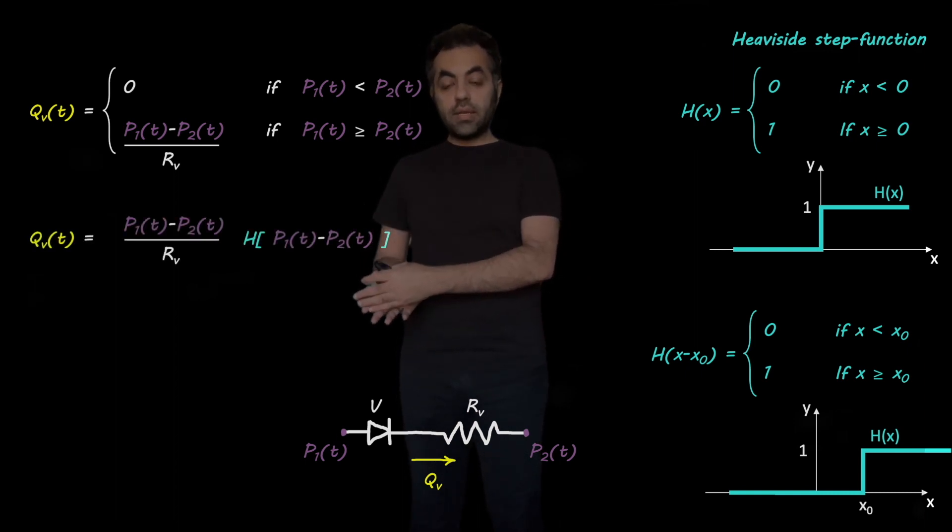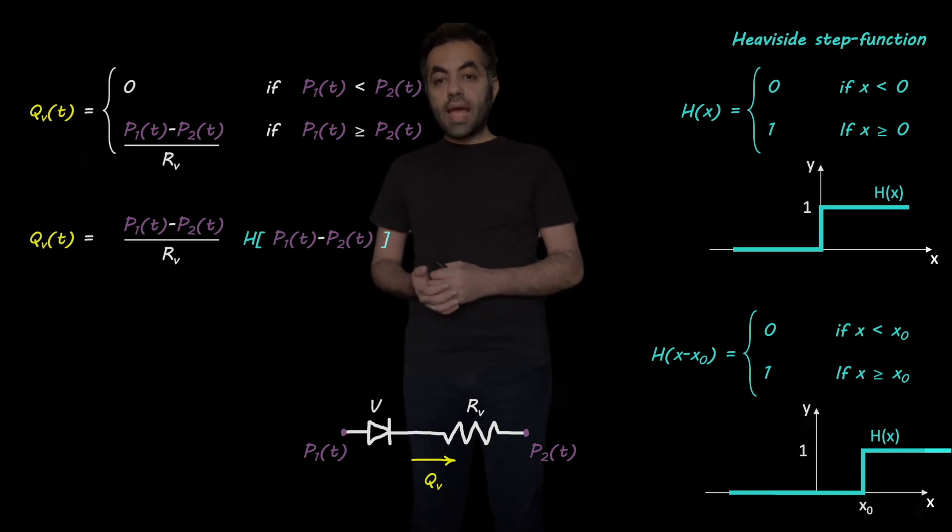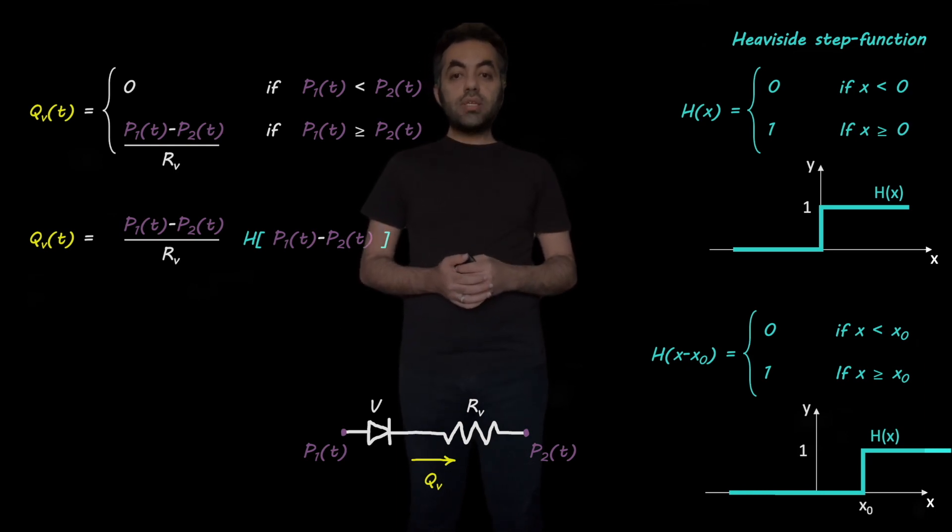It can be written as this. Here we have the Heaviside step function in the right hand side. And we have P1 minus P2 as the argument of the Heaviside step function. Whenever it is negative, then we have a value of zero for the step function. And whenever it is positive, then we get one.